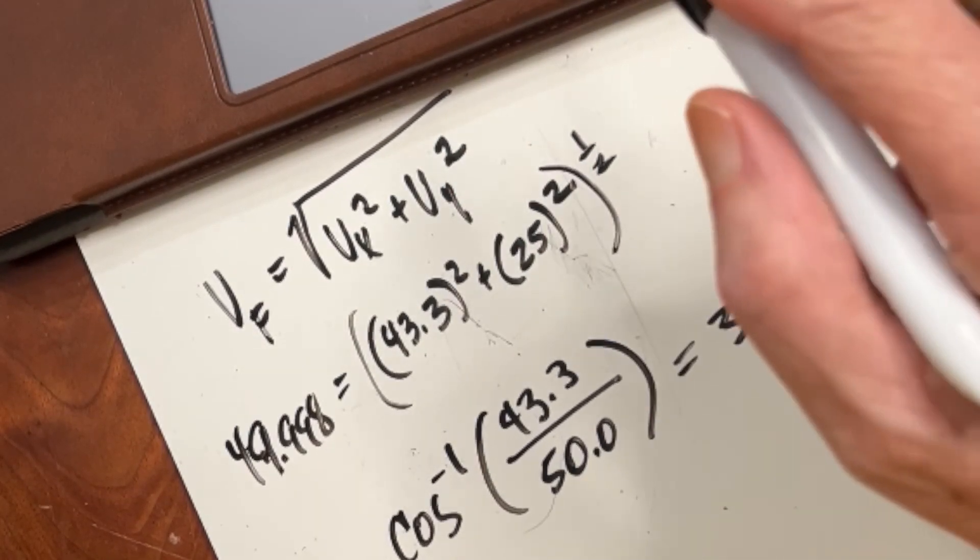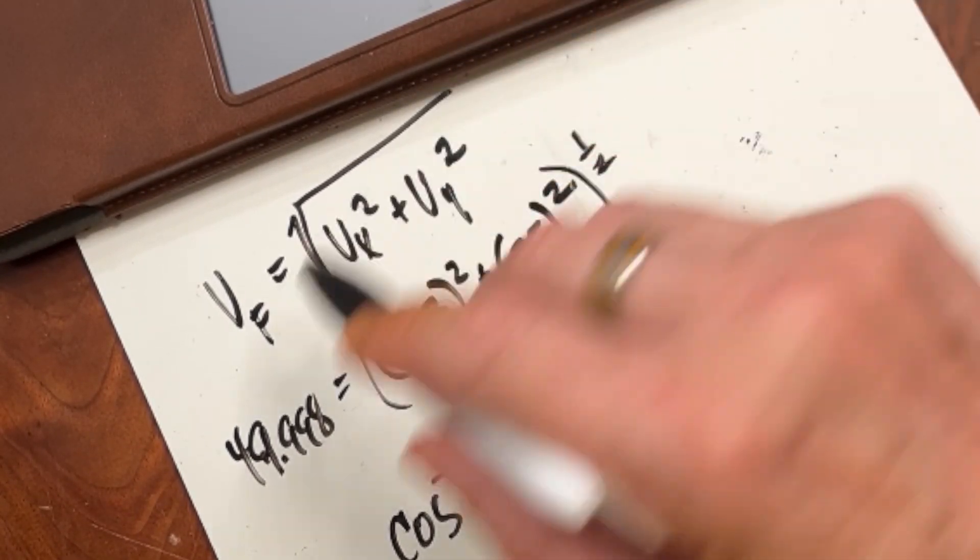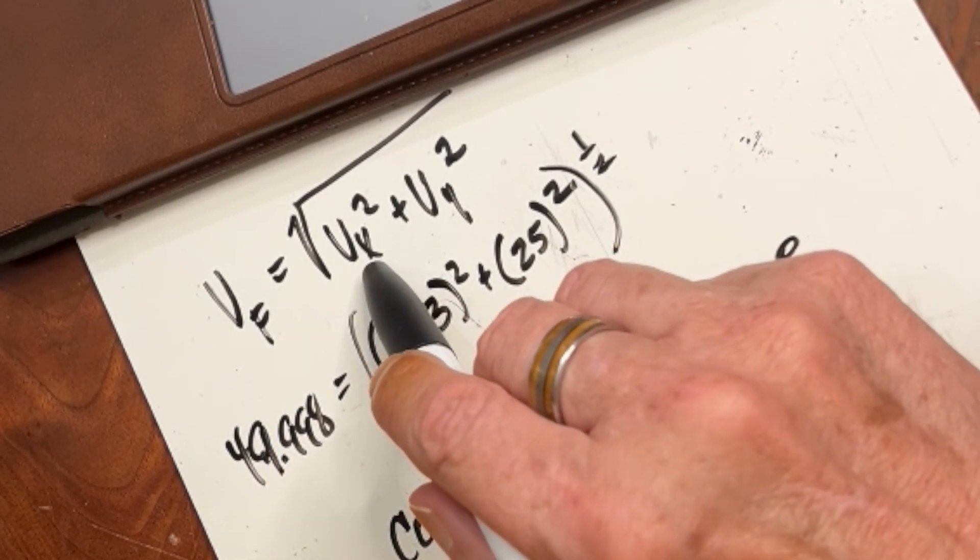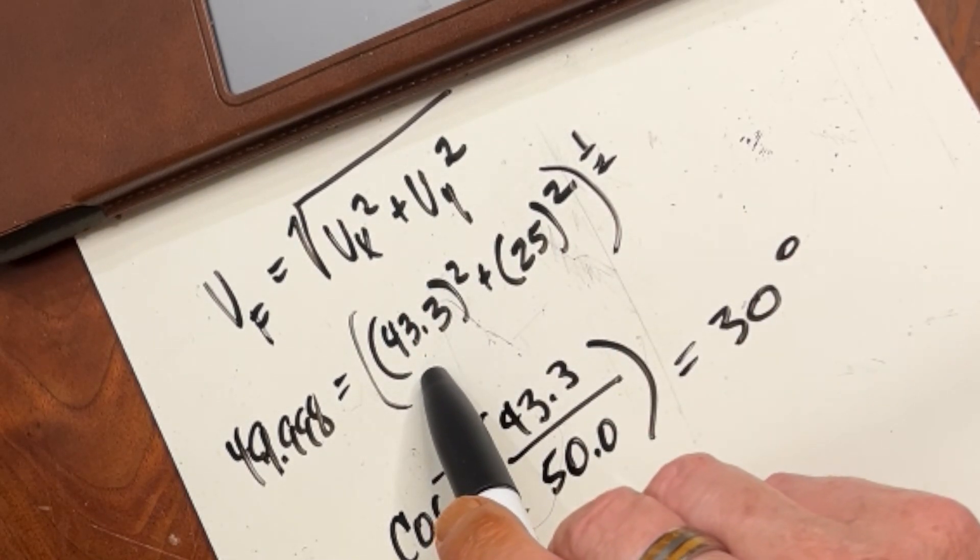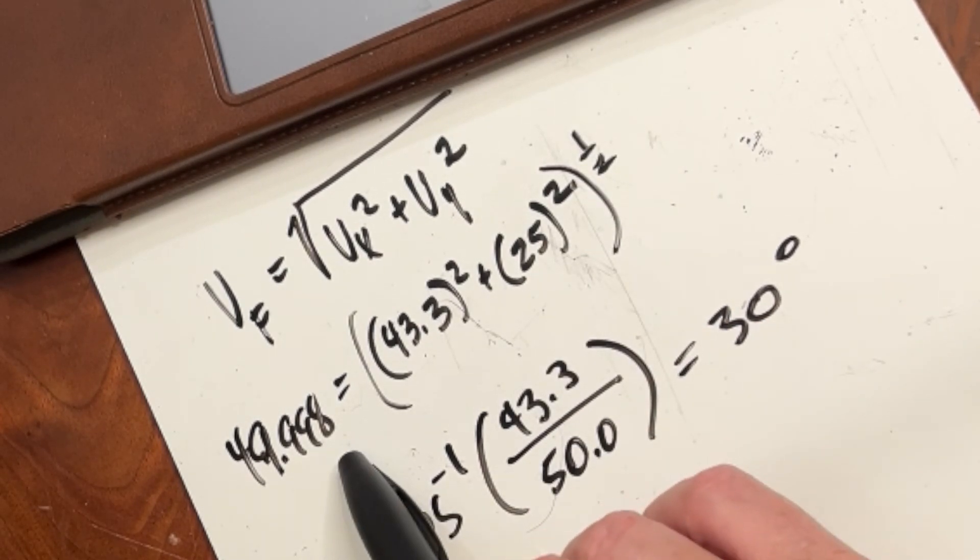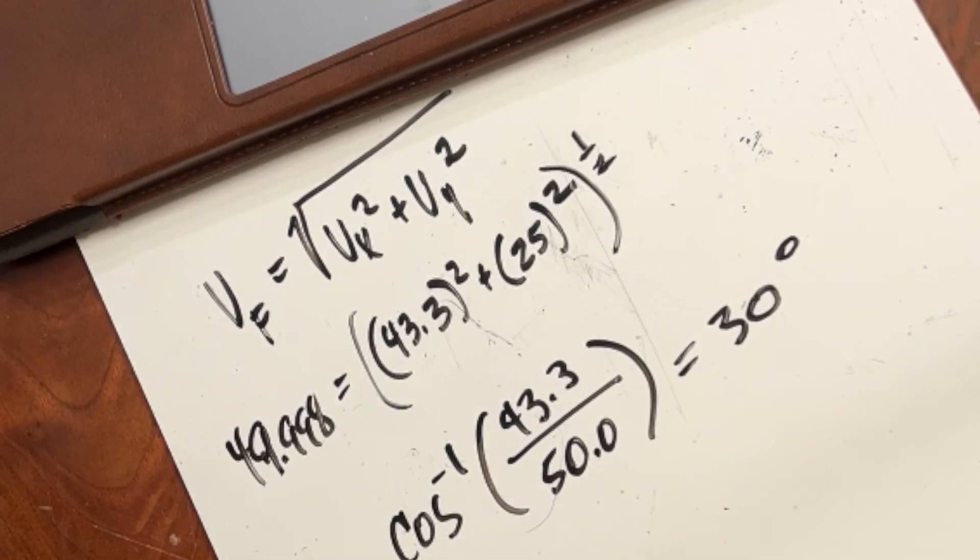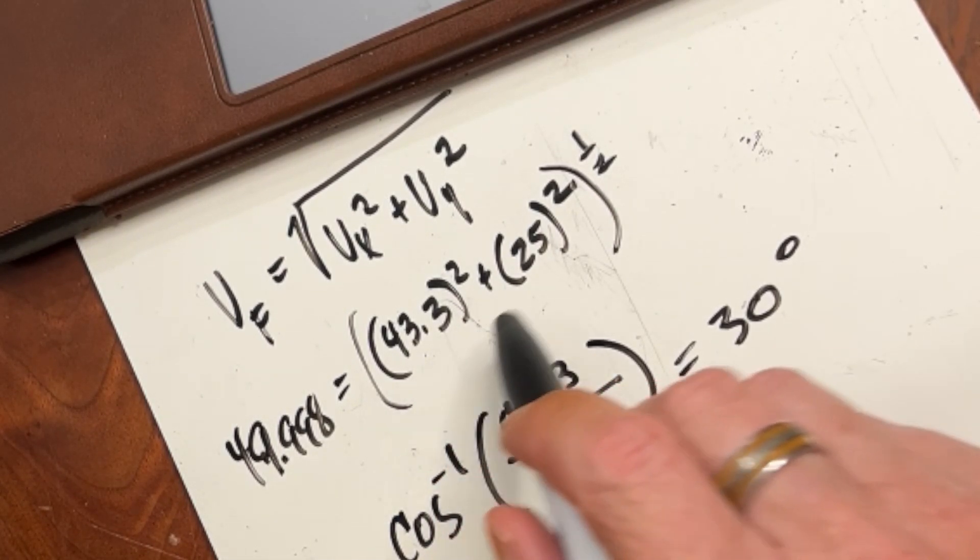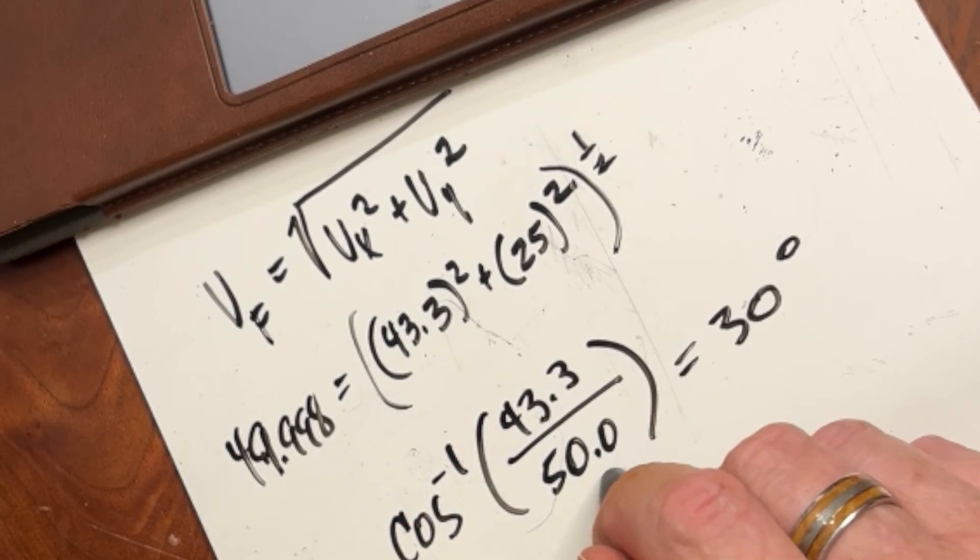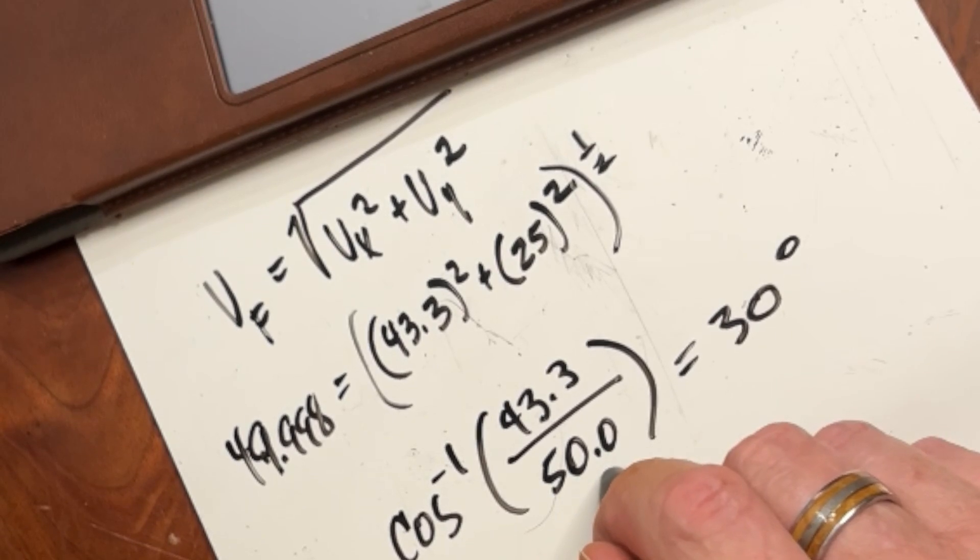Now just for completeness sake let's go ahead and figure out the final velocity. The final velocity of the ball will be the square root of vx squared plus vy squared. Vx squared is 43.3. Vy is 25. We square those and take the square root we get 49.998. The only reason that's not 50 is rounding errors. And what is the angle going to be? Well the angle is going to be vx over the hypotenuse which is the total vector of 50 meters per second. And we'll take the arc cosine of that. And when you do that you find out the angle is 30 degrees.